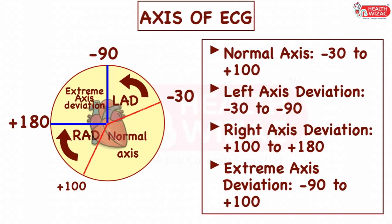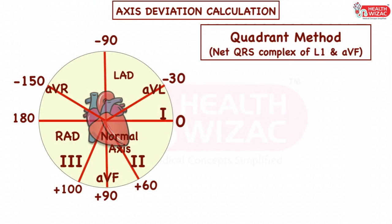Normal ECG axis is between minus 30 degrees to plus 100 degrees. Axis deviation between minus 30 degrees to minus 90 degrees is labeled as left axis deviation, whereas axis deviation between plus 100 degrees to plus 180 degrees is labeled as right axis deviation. Anything outside this value is labeled as extreme axis deviation. Axis deviation is usually calculated by the quadrant method, in which the net QRS complex of lead 1 and AVF is plotted on a graph.